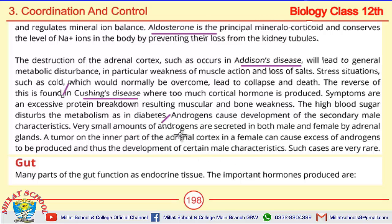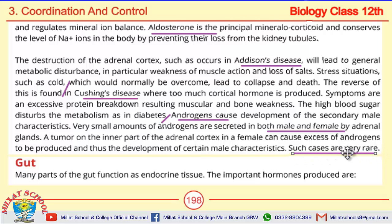Next we look at androgens. Androgens are for secondary male characteristics. Remember that a small amount of androgens is present in both males and females. However, if a tumor forms in the inner part of the adrenal cortex in a female, then more androgens are released, causing male characteristics to appear in females — but this is a very rare case.